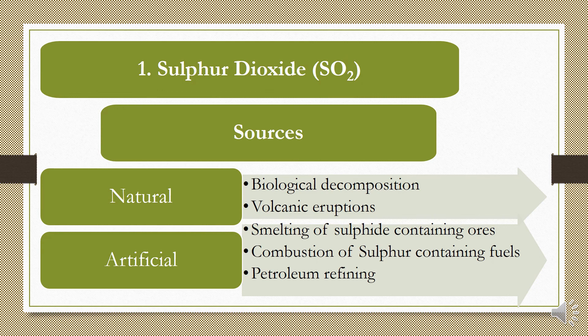During smelting — the breakdown of ore — sulfur dioxide can be emitted. Fuels containing sulfur, like coal, contain a considerable amount of sulfur; combustion of that coal generates sulfur dioxide. Sulfur dioxide is also generated during the refining of petroleum.